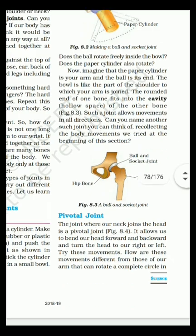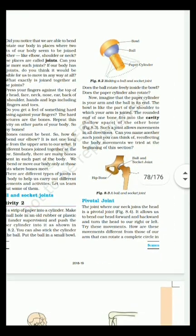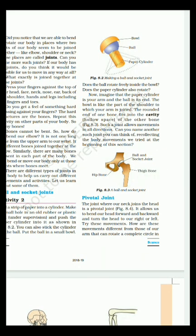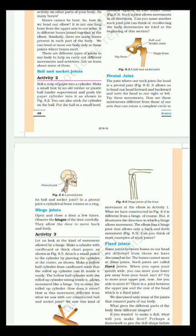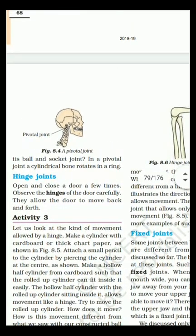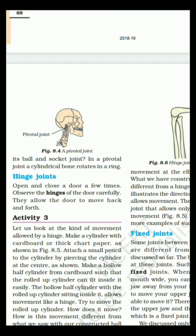Next is Pivotal joint. The joint where our neck joins the head is a pivotal joint. It allows us to bend our head forward and backward and turn the head to our right or left. In all directions, right? And before that, you can see the pivotal joint. In a pivotal joint, a cylindrical bone rotates in a ring.